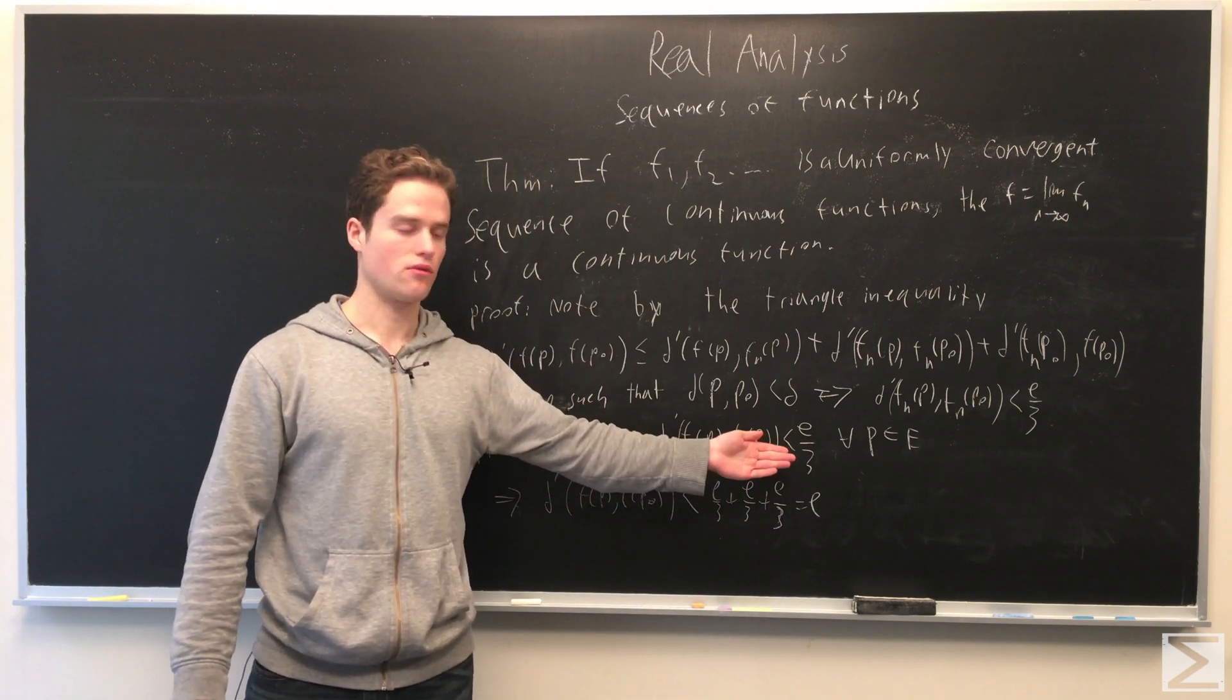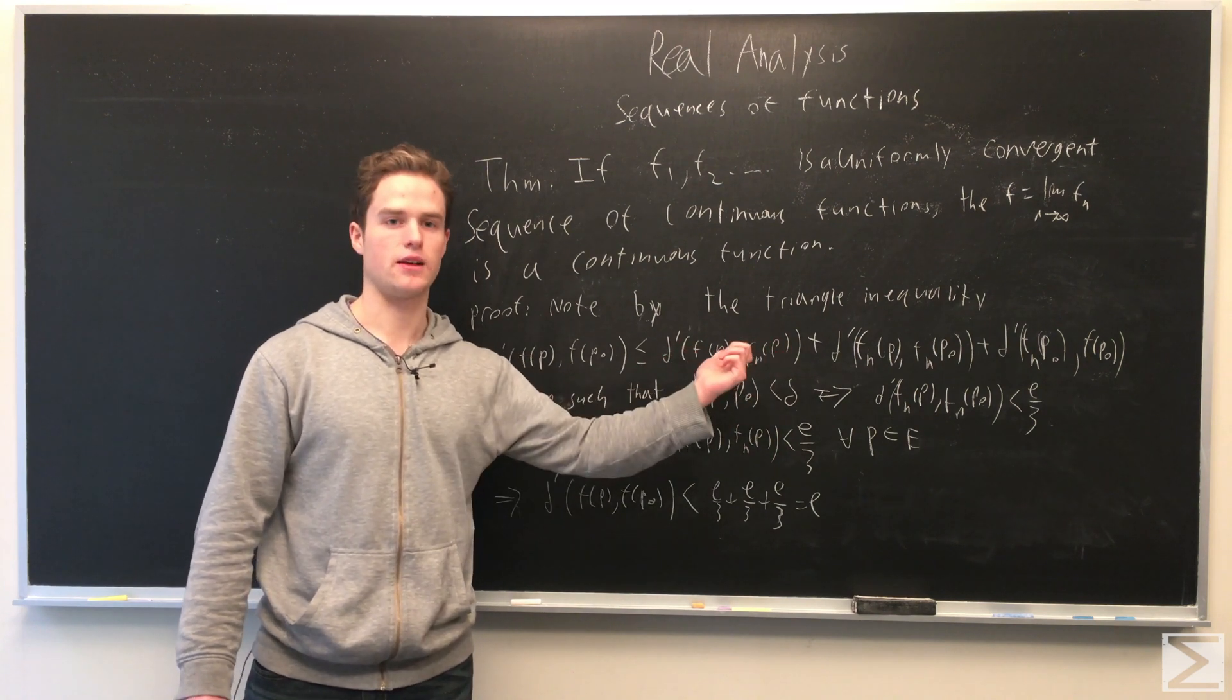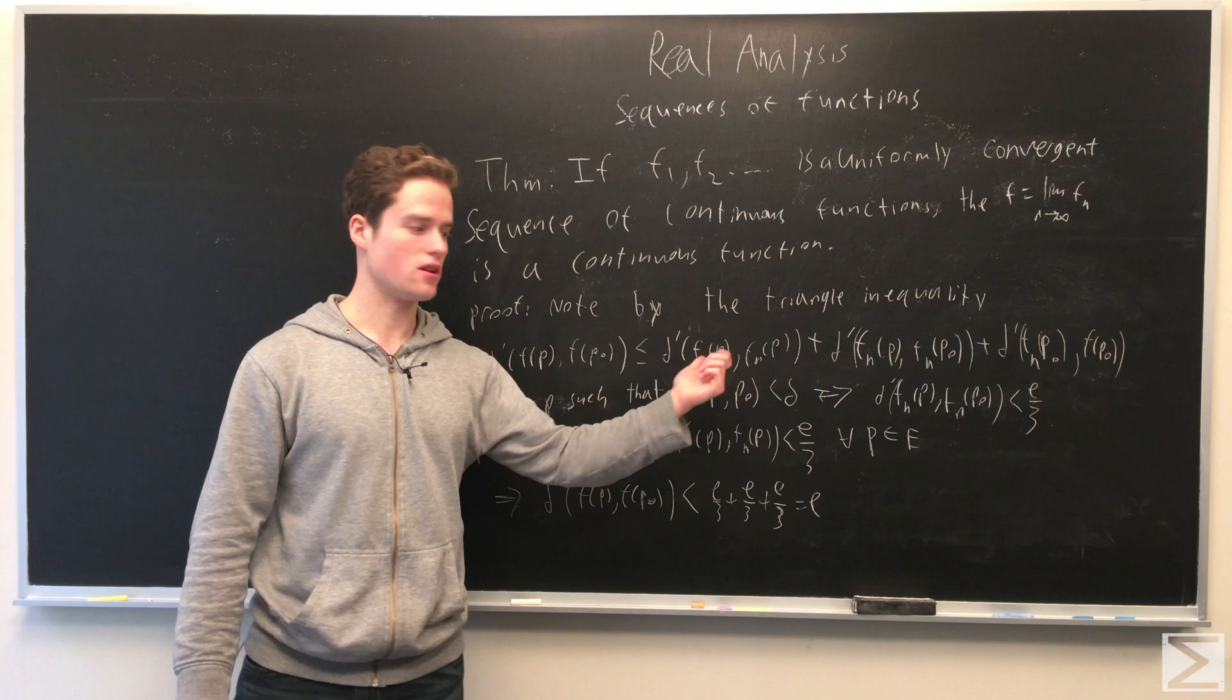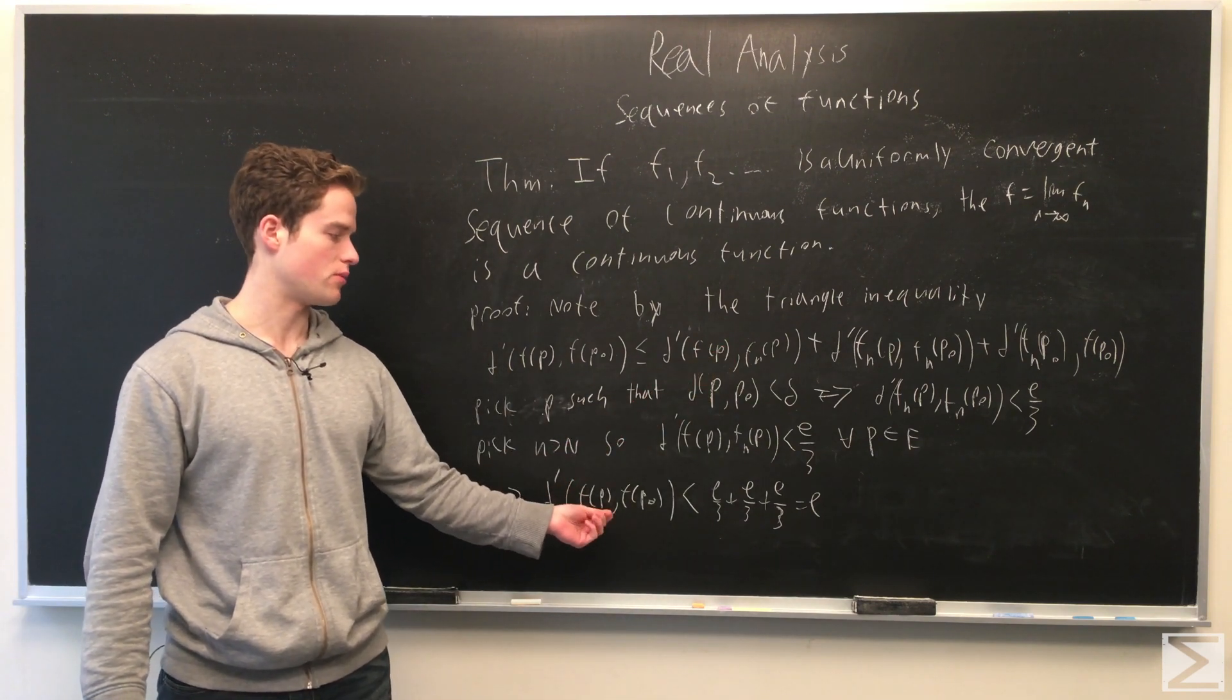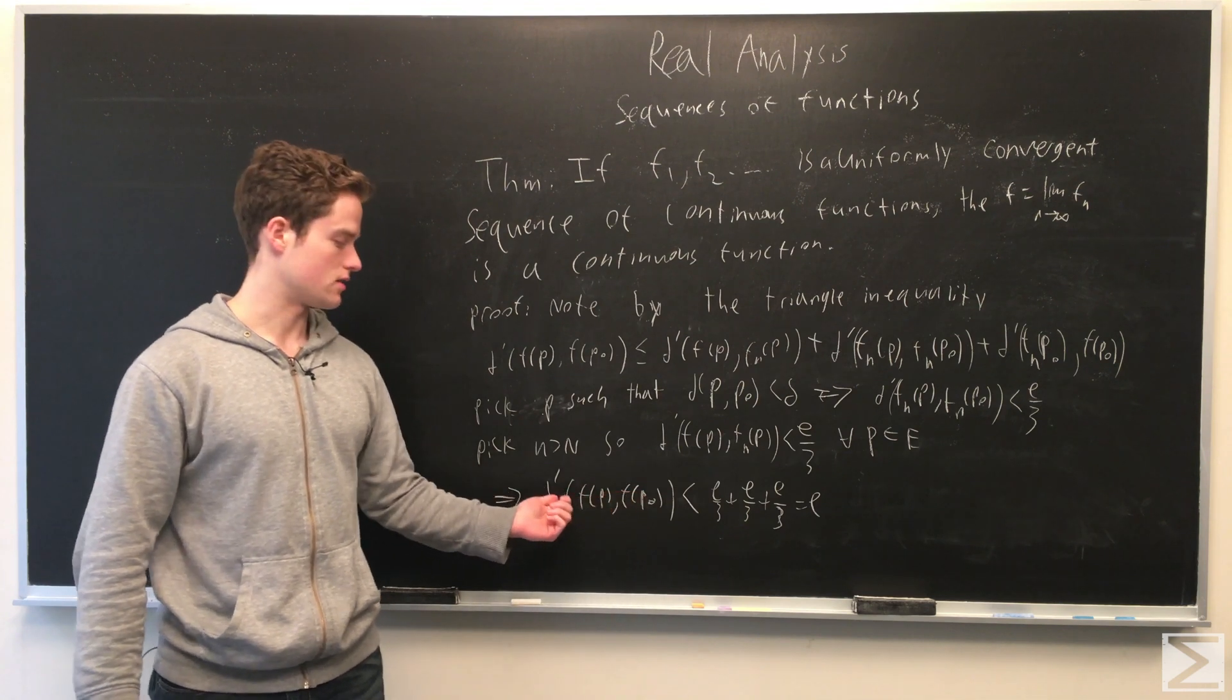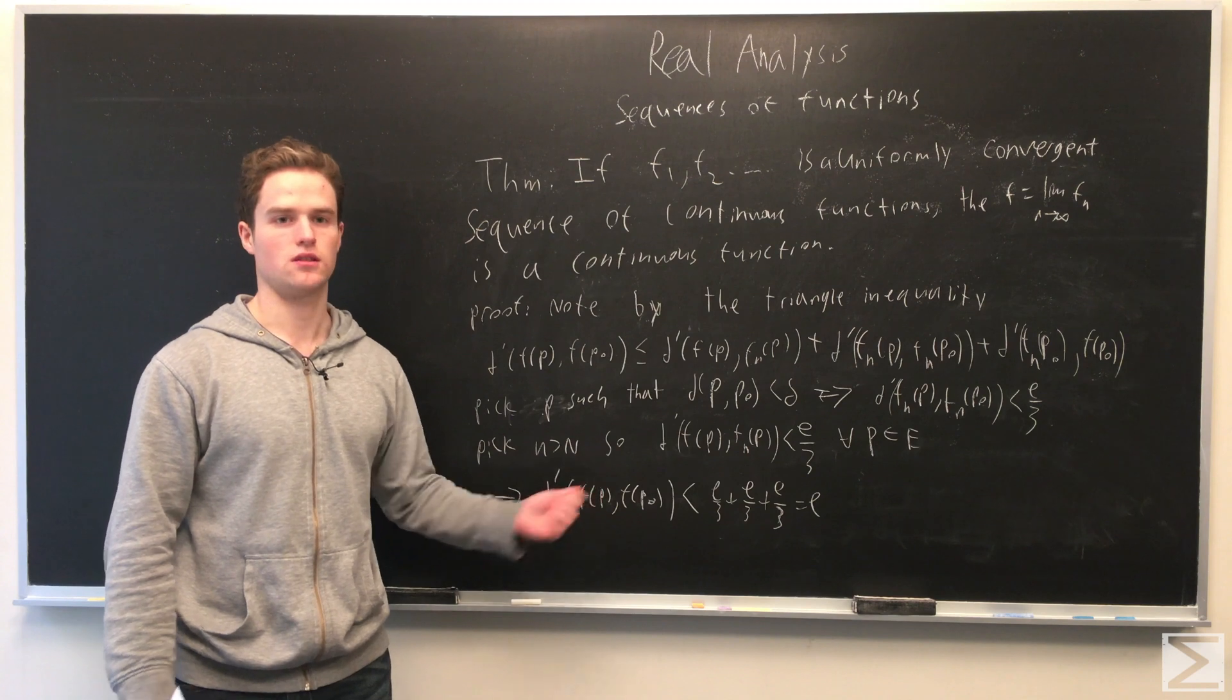Plugging in epsilon over 3 for each of these terms, the sum is less than epsilon over 3 times 3, which is just epsilon. So for p close enough to p_0, the distance between f(p) and f(p_0) is less than epsilon. Since p was arbitrary in E, f is a continuous function.